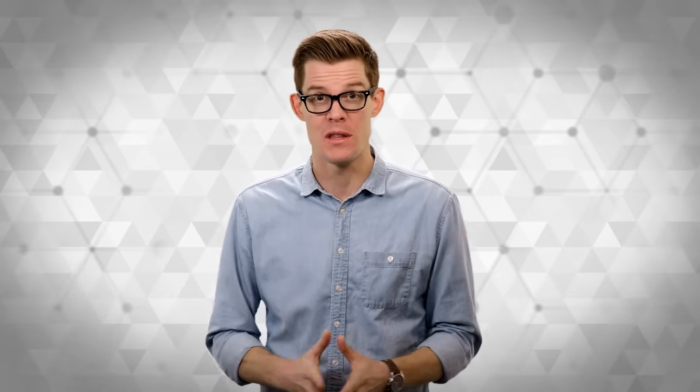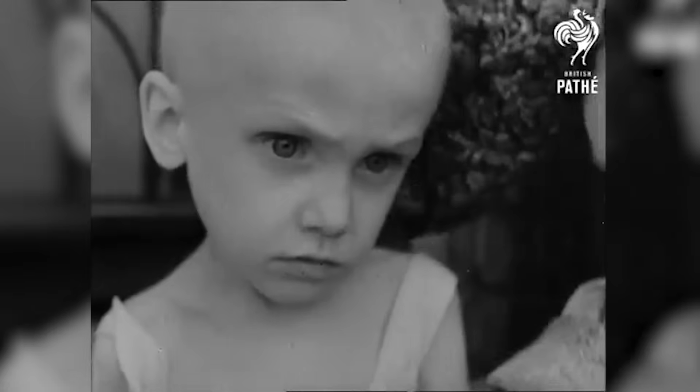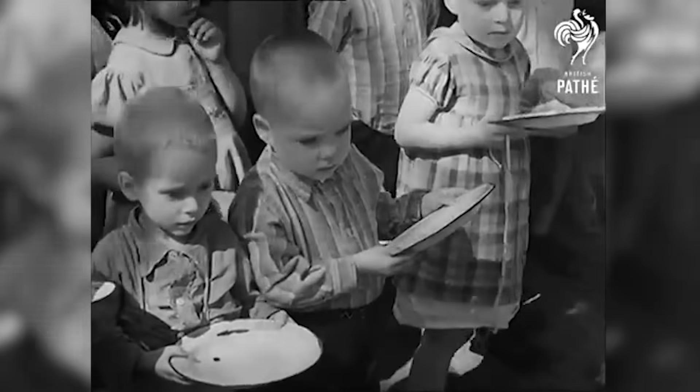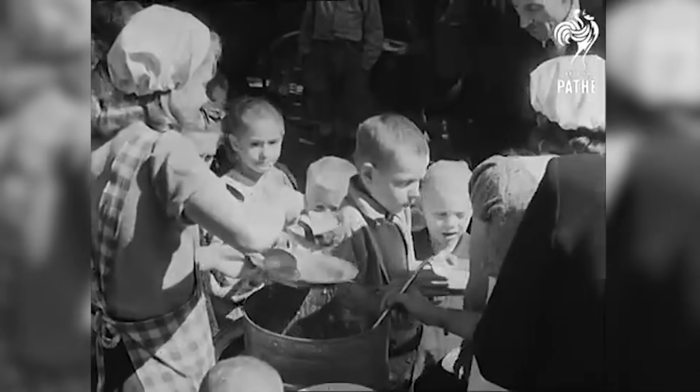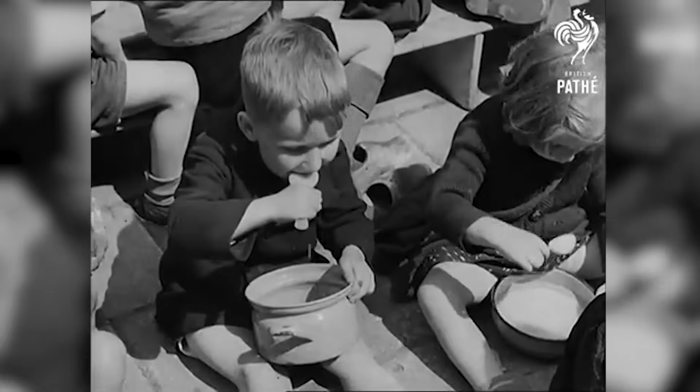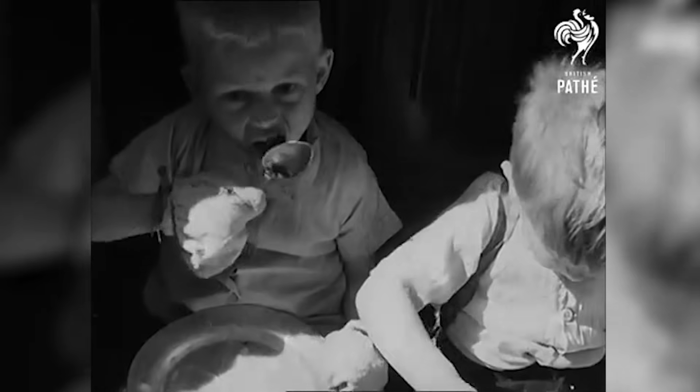This strange inheritance might even happen in humans. During the Dutch famine at the end of World War II, children undernourished in the womb still carried epigenetic changes more than 60 years later. And since these changes happened in the womb, they could have a huge effect on our health as adults.